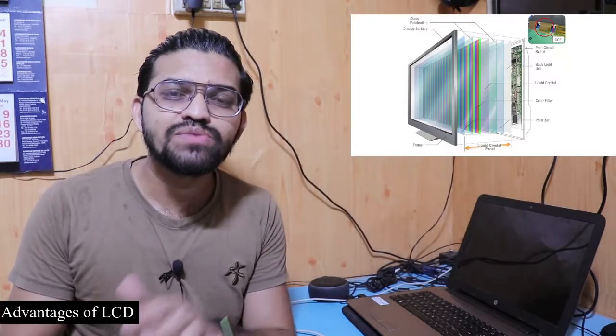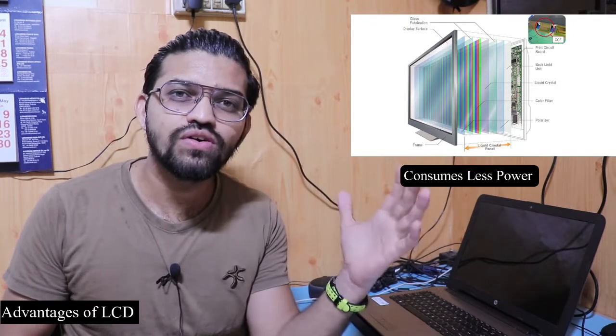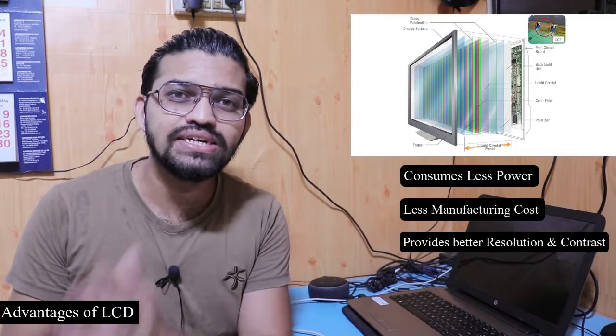Before LCD panels were invented, we used conventional CRT televisions — heavy, bulky boxes using cathode ray technology. LCDs replaced CRTs because they are thinner, cheaper, and portable. Advantages of LCD over CRT include: lower power consumption, lower cost, better resolution, and better contrast than cathode ray tubes.